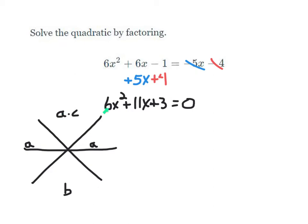Remember, if we're going to be factoring, we use the x game. But in this example, we have an a that's greater than 1, so we're actually going to use the star method. We start out with the x, but then we add this additional line — we'll call this the star method. We're still finding a times c, or the factors of a times c that equal b. But we're going to write our a here and our a here as well. Now, a times c — that's 6 times 3, which is 18. So we need to find the factors of 18 whose sum is b, which is 11. And remember, we're just going to write the a, which is 6, here.